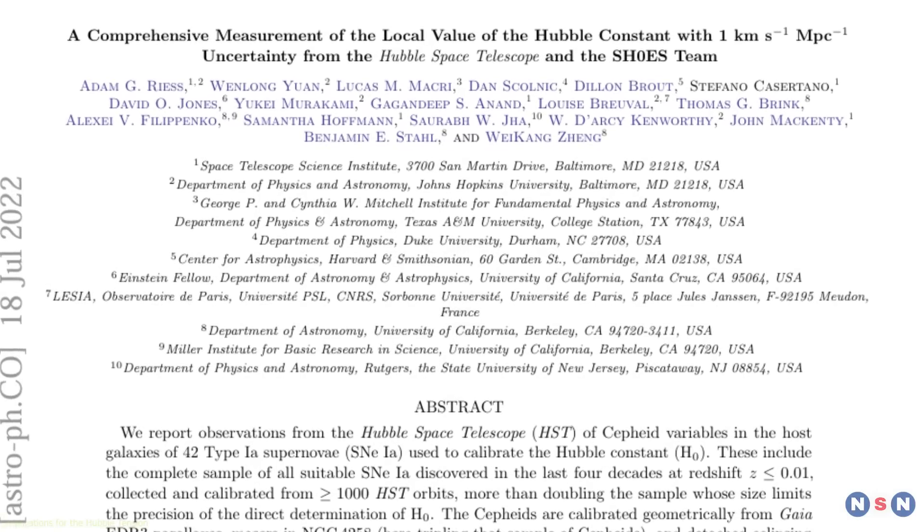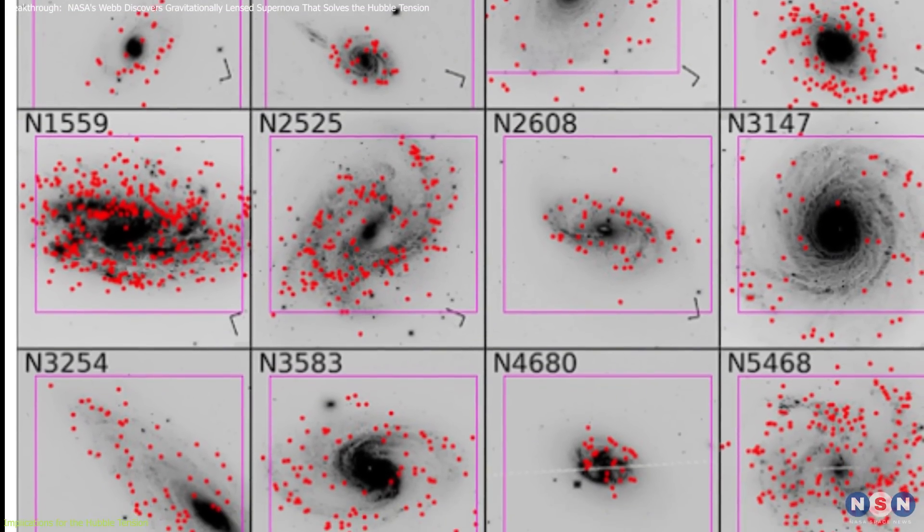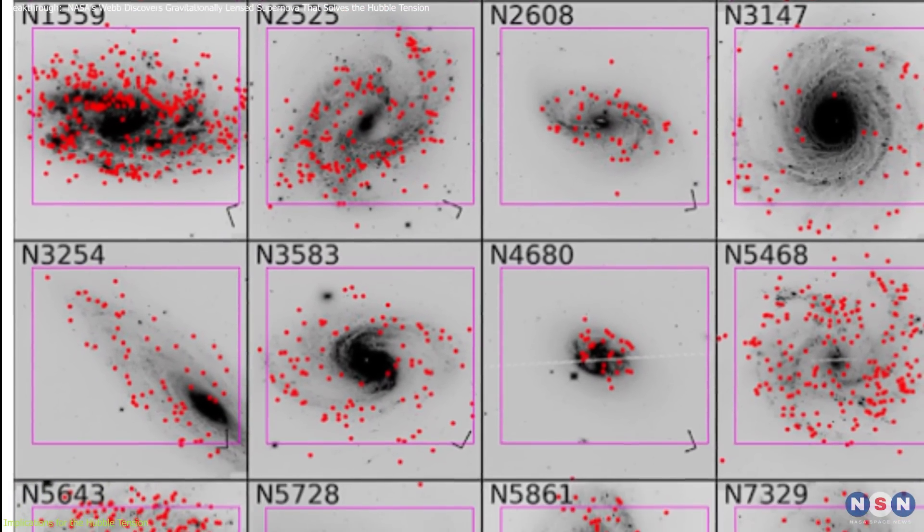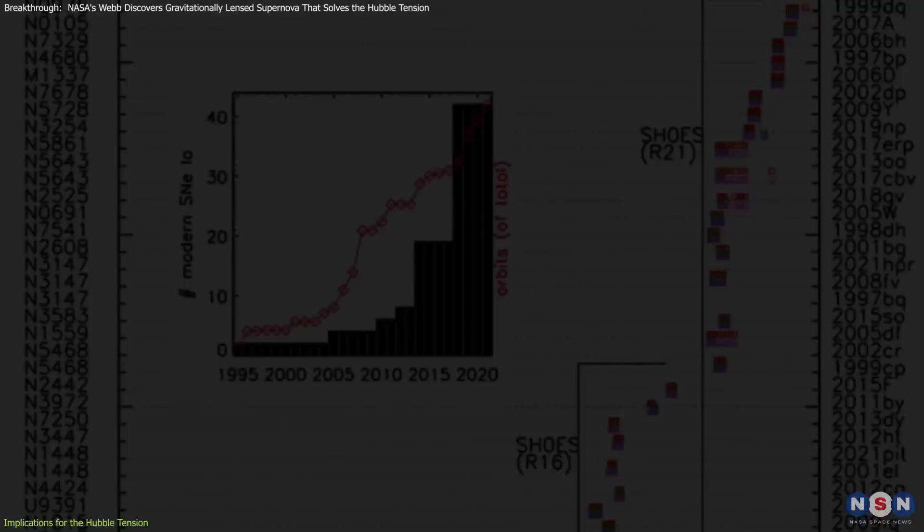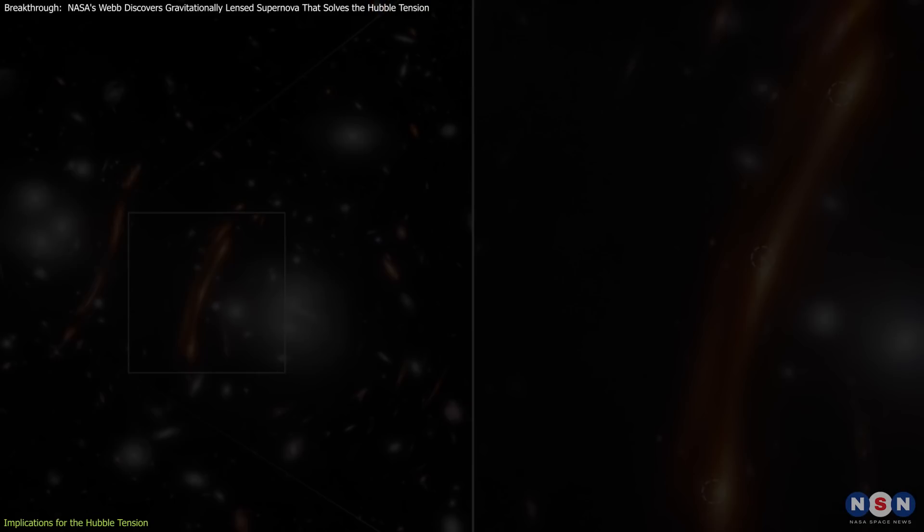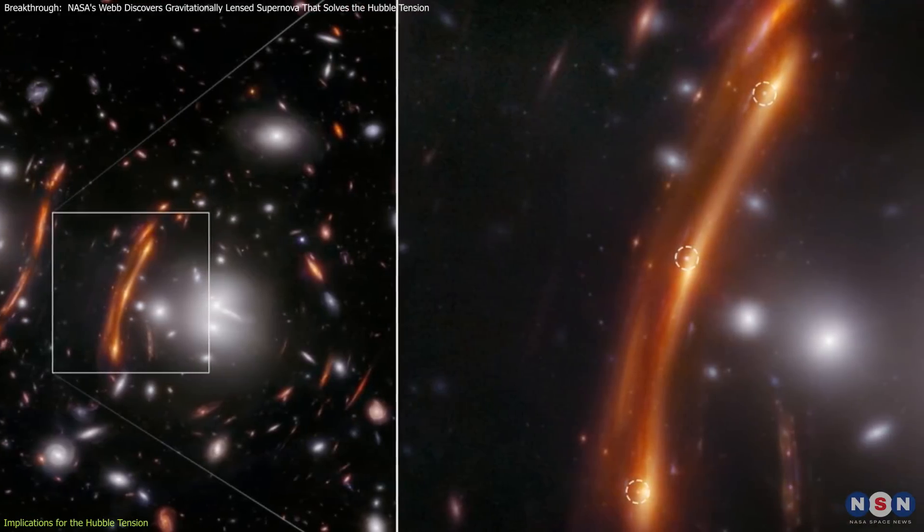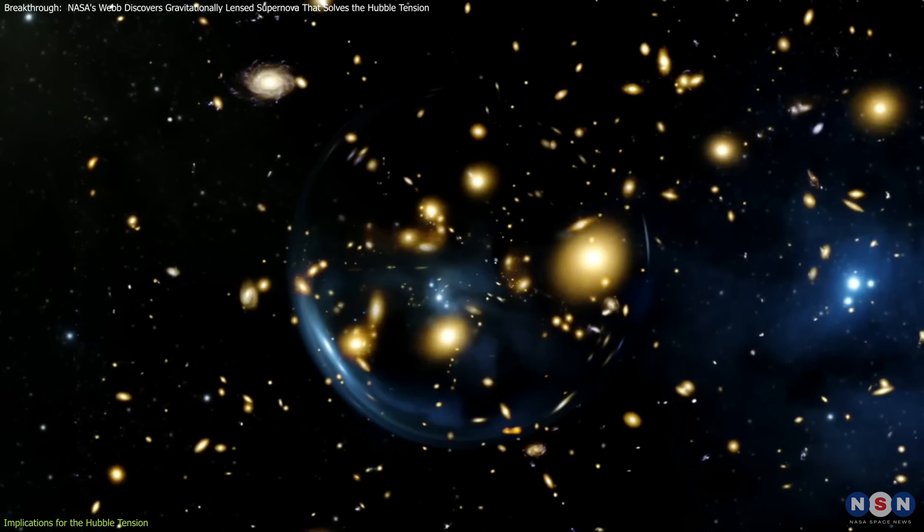Enter the SH0ES Project, led by Adam Riess, which has been at the forefront of using Type 1a supernovae to measure the Hubble constant. This project has played a significant role in highlighting the Hubble tension and has consistently found a higher value for the Hubble constant. Supernova Hope adds another layer of complexity to this debate by providing an independent method for measuring the expansion rate through gravitational lensing.